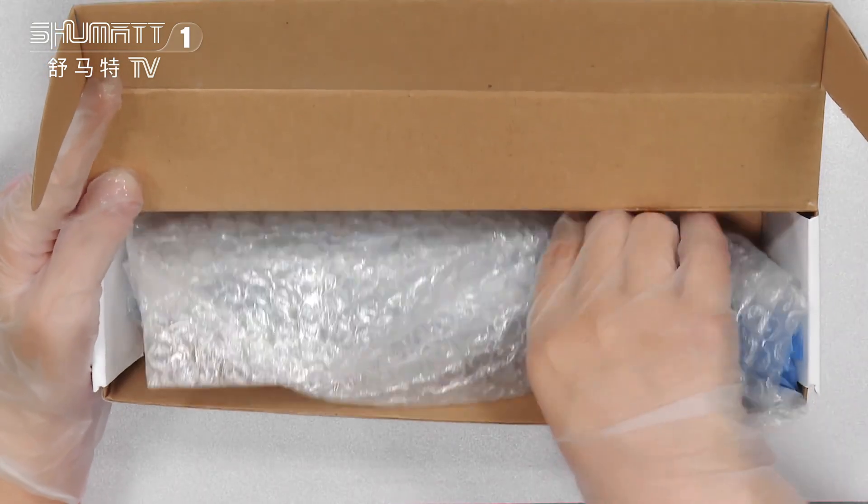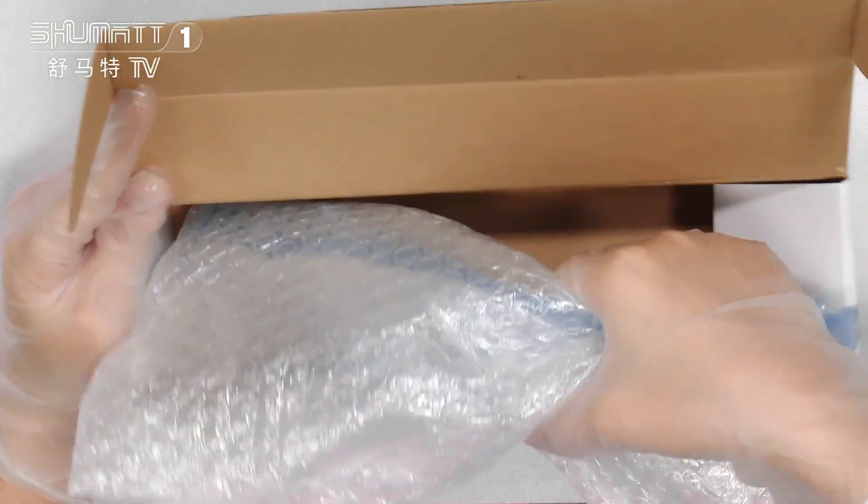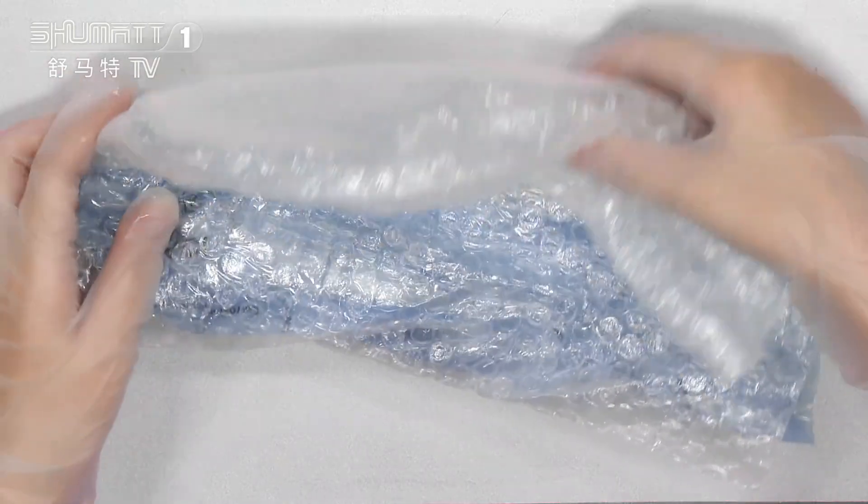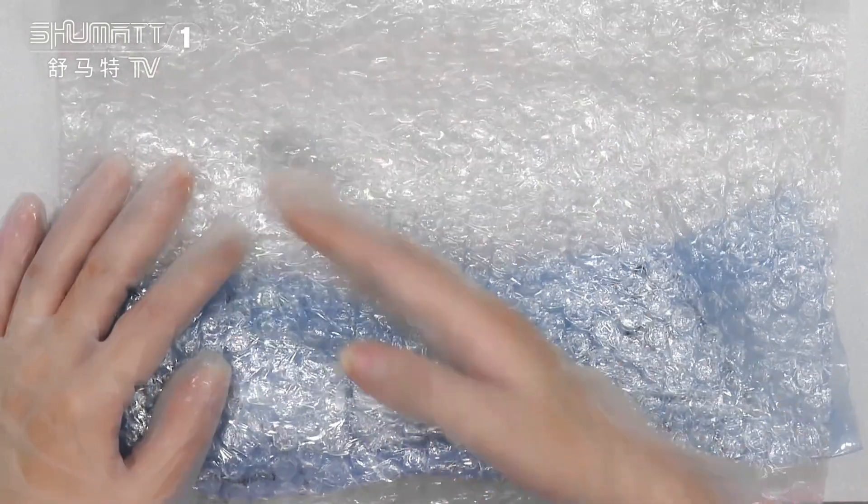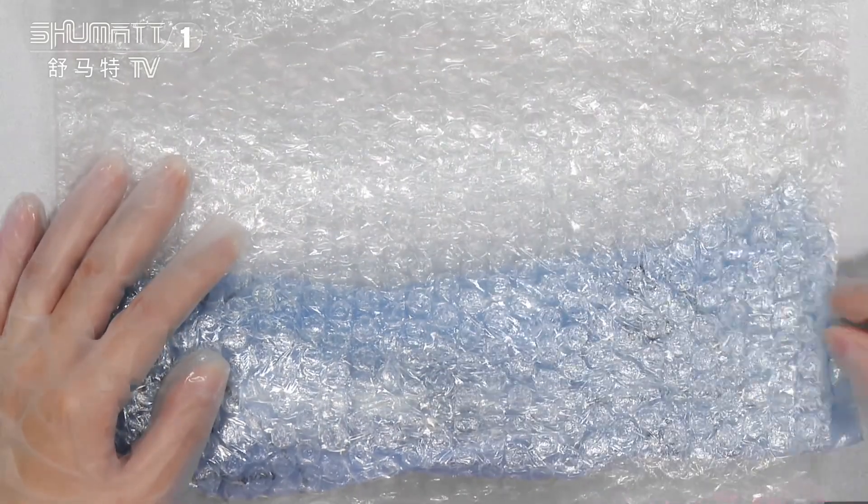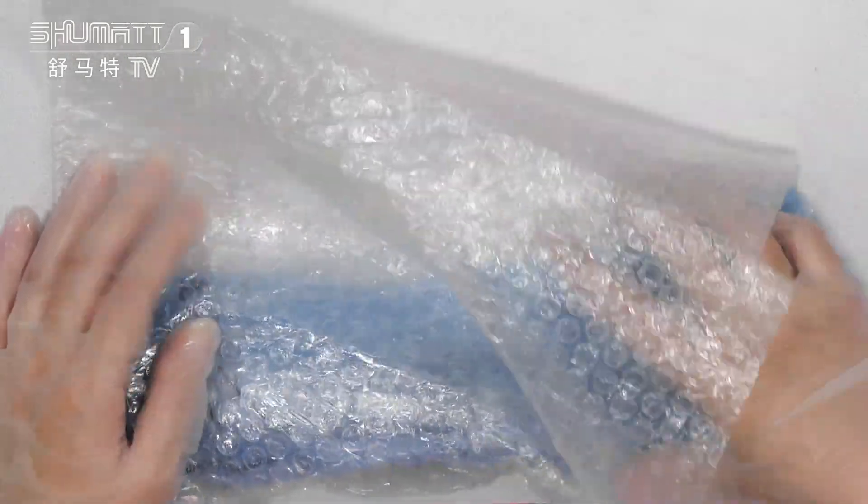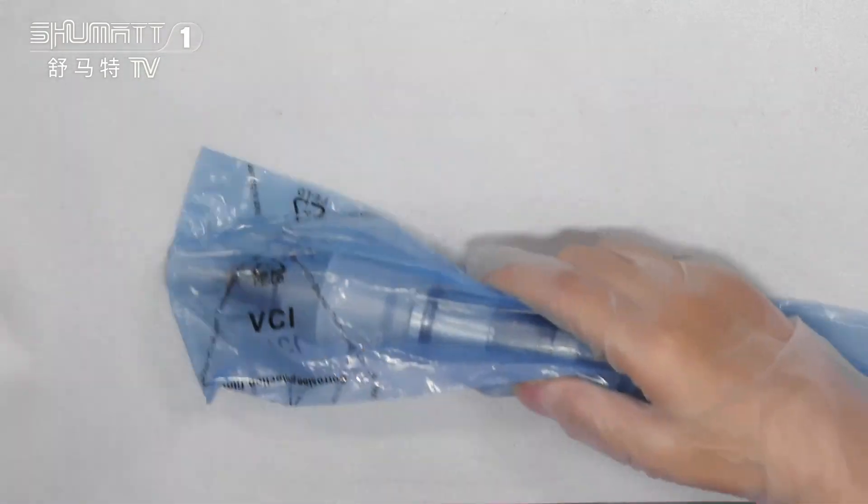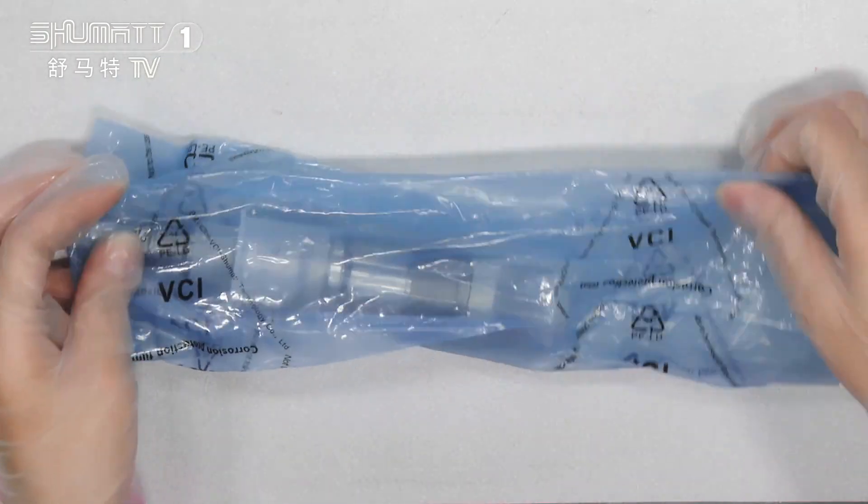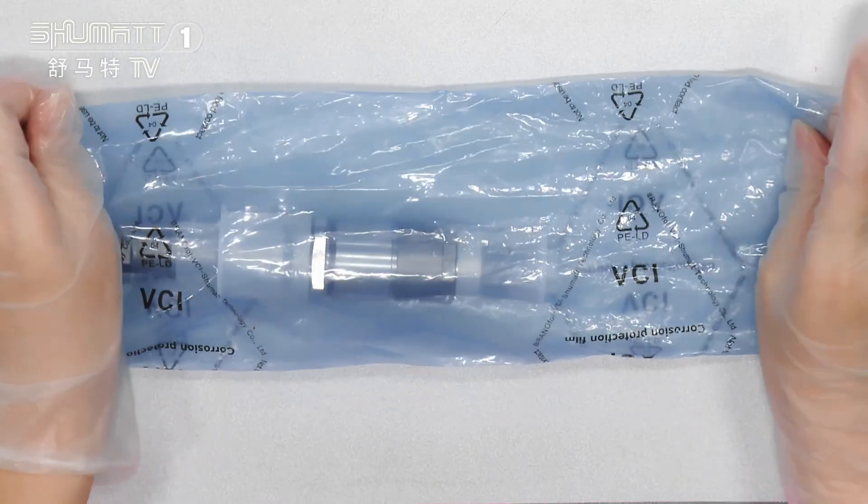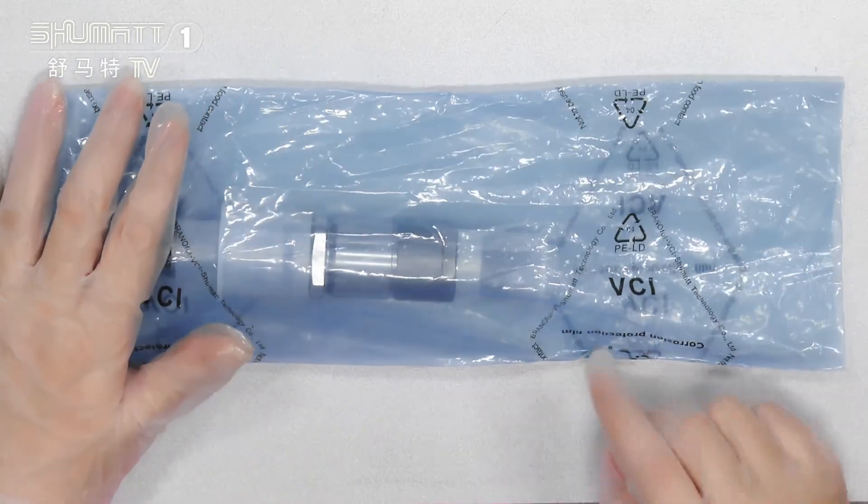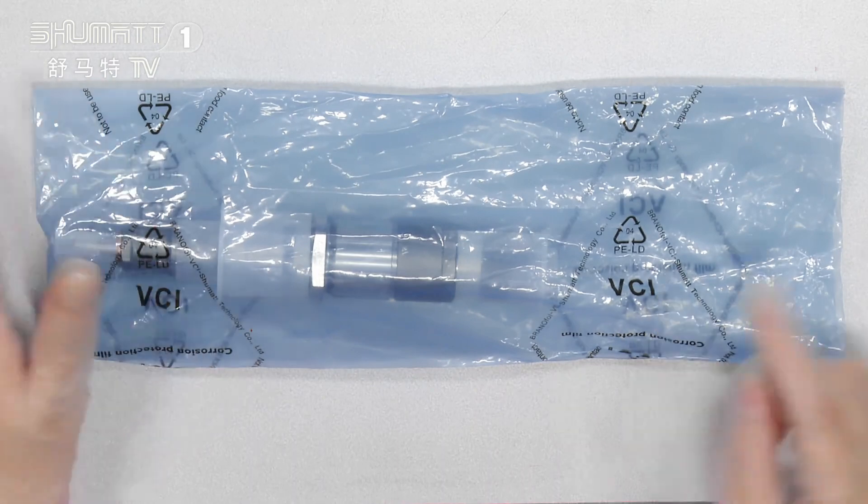For the inside part, we packed it with two layers. The first layer, and the second layer. This is a VCI anti-rust bag.